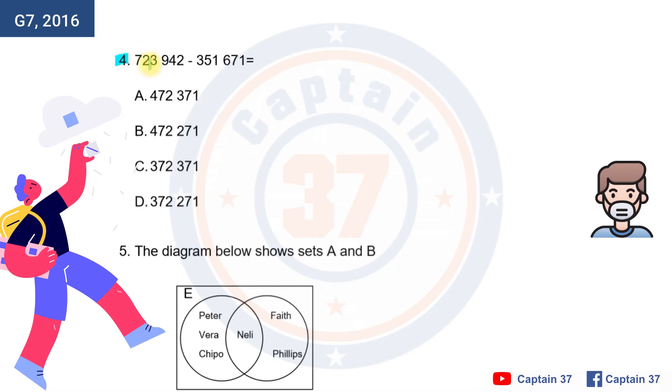Question number four: 723,942 minus 351,671. You should know how to pronounce and read those numbers and how to say them correctly.